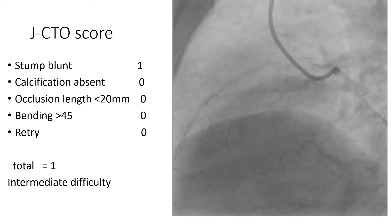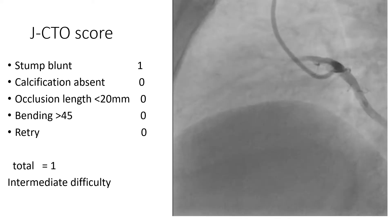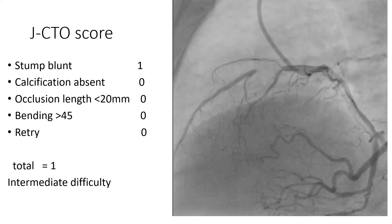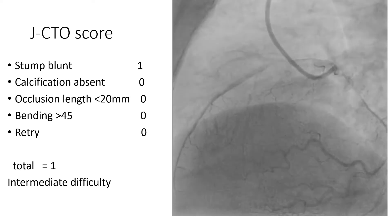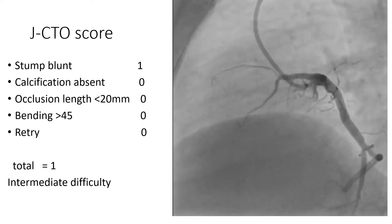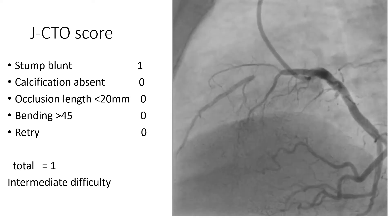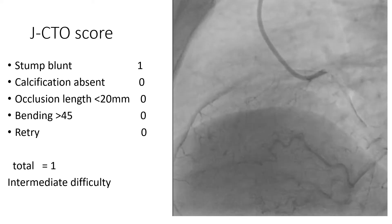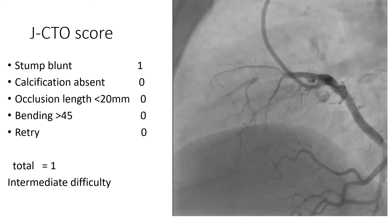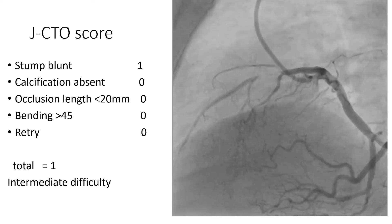However, what the JCTO score does not account for is the presence of branches at the site of the occlusion. Here we have two branches, which we will show in a moment.